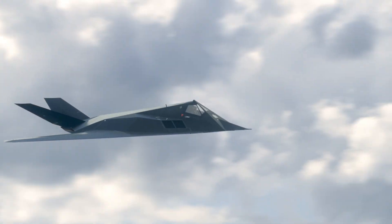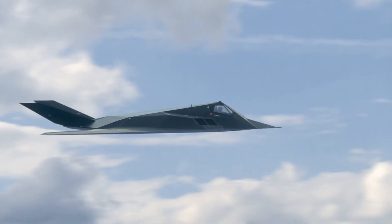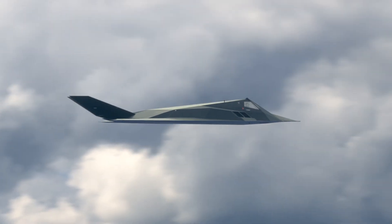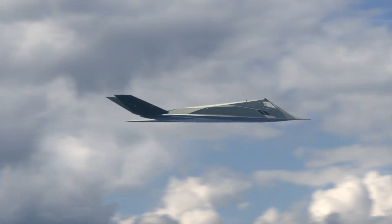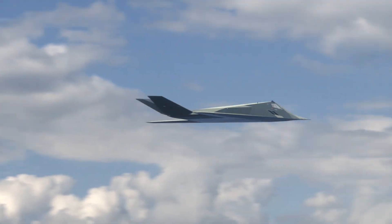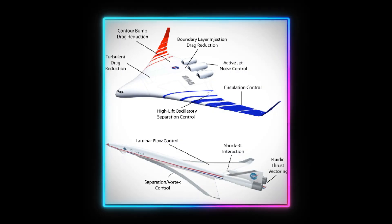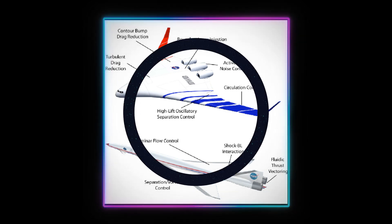Active flow control allows an aircraft to be as smooth and sleek as possible, making it safer for the military to fly in dangerous areas where radar scans the sky for sharp edges. It could also be used to make commercial airplanes more fuel efficient by removing existing steering parts that create drag.